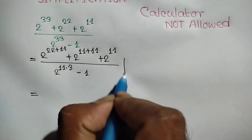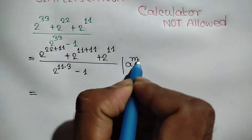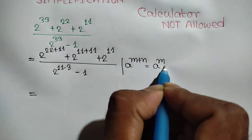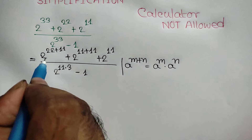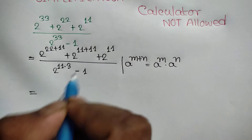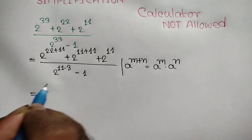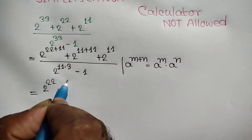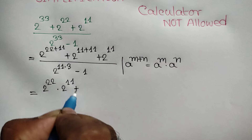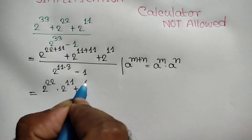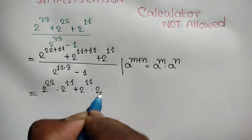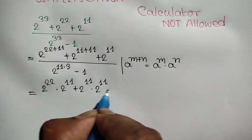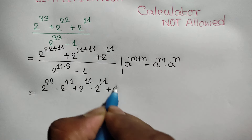We know that a to the power m plus n equals a to the power m times a to the power n. Applying this rule, the numerator becomes 2 to the power 22 times 2 to the power 11, plus 2 to the power 11 times 2 to the power 11, plus 2 to the power 11.